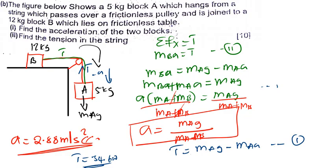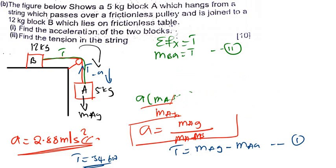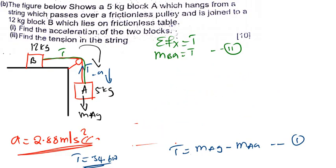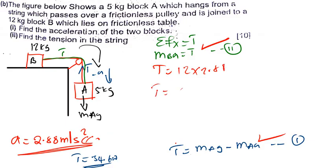Now that we have the derived formula, finding the tension force is just a matter of plugging in values. Using block B: tension equals 12 times 2.88, giving a tension of 34.56, which is 34.6 newtons. As you can see, both methods give the same answer. It's something straightforward - just a matter of following the steps.